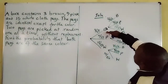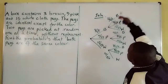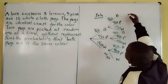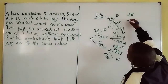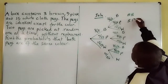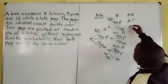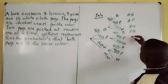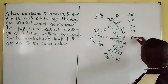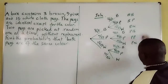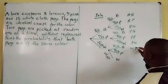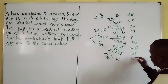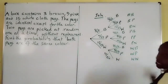The possible outcome pairs are: brown–brown, brown–pink, brown–white, then pink–brown, pink–pink, pink–white, then white–brown, white–pink, and white–white.